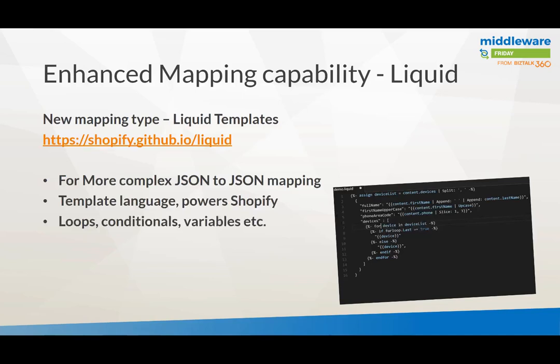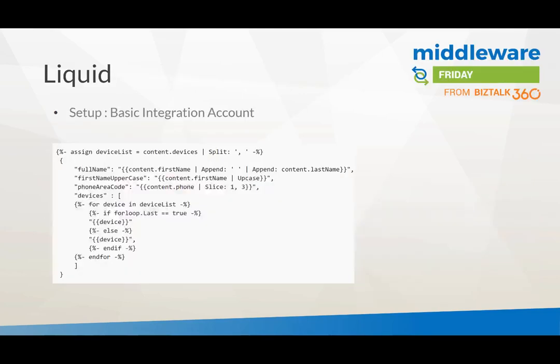You might be familiar with this if you've done XSLT inside BizTalk. You can do looping, conditional variables, and lots of other things. It doesn't have any graphical representation like the BizTalk mapper — it's more hands-on where you build the template with a language, similar to how you do XSLT. To use Liquid, you need an integration account, which serves as the repository where you can store your mappings and templates.